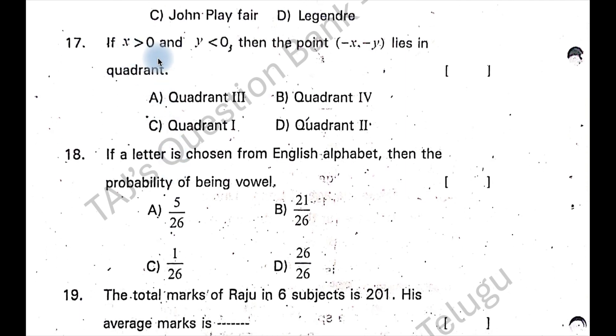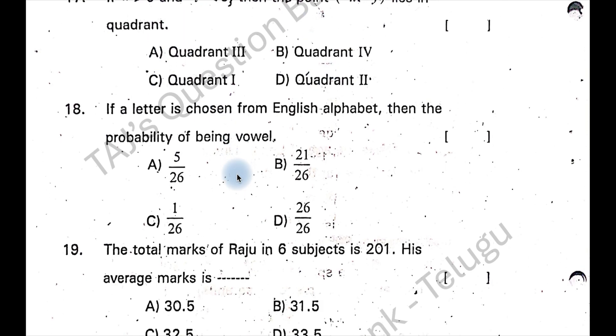x is greater than 0, y is less than 0, so minus x and minus of y, it will be positive value. So x value is negative, y value is positive. Now you decide where it comes. It comes in the second quadrant, option D.